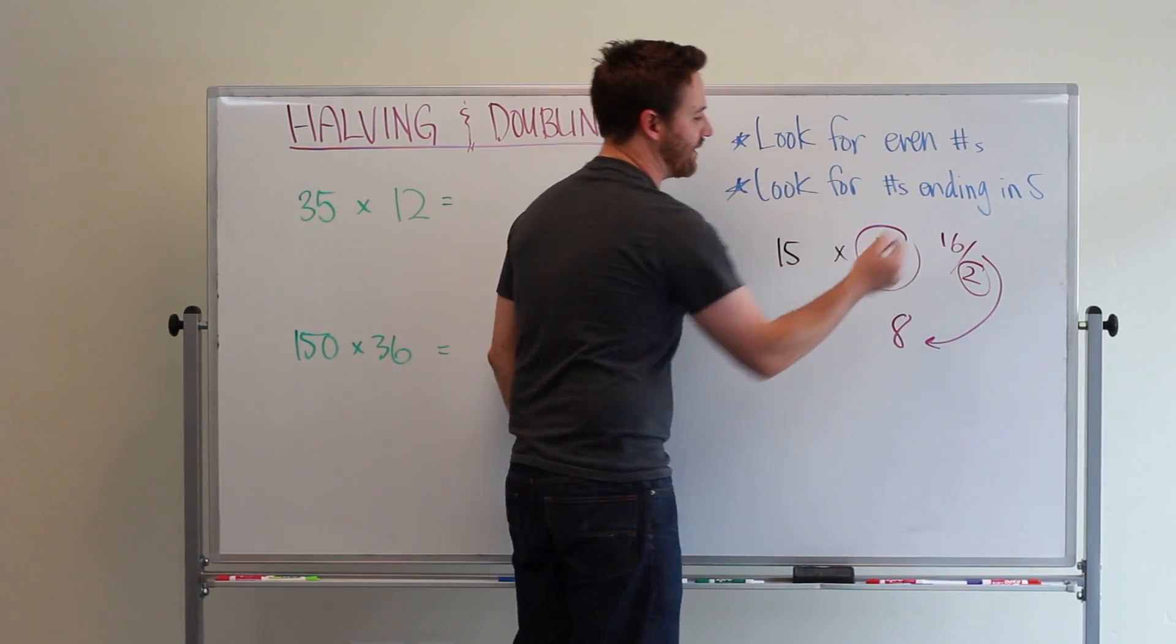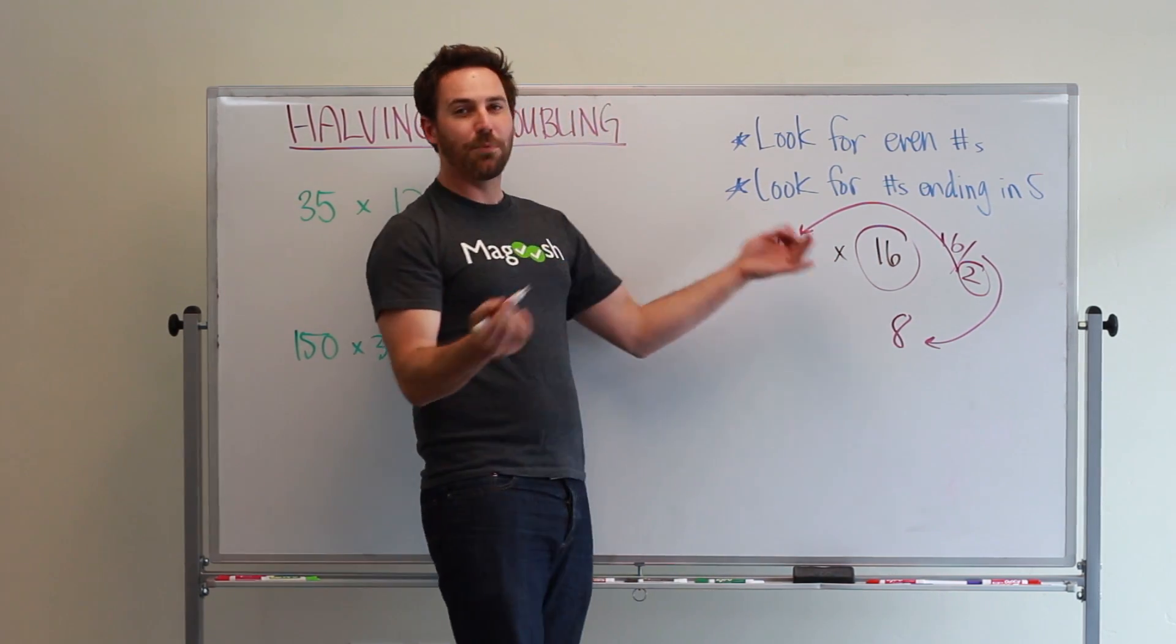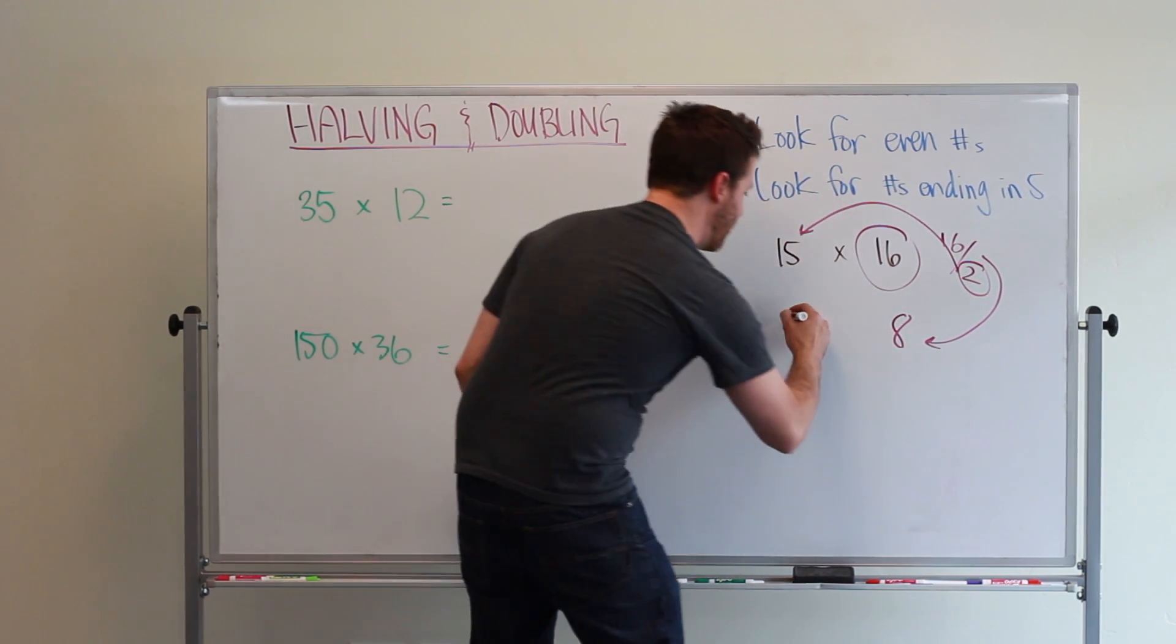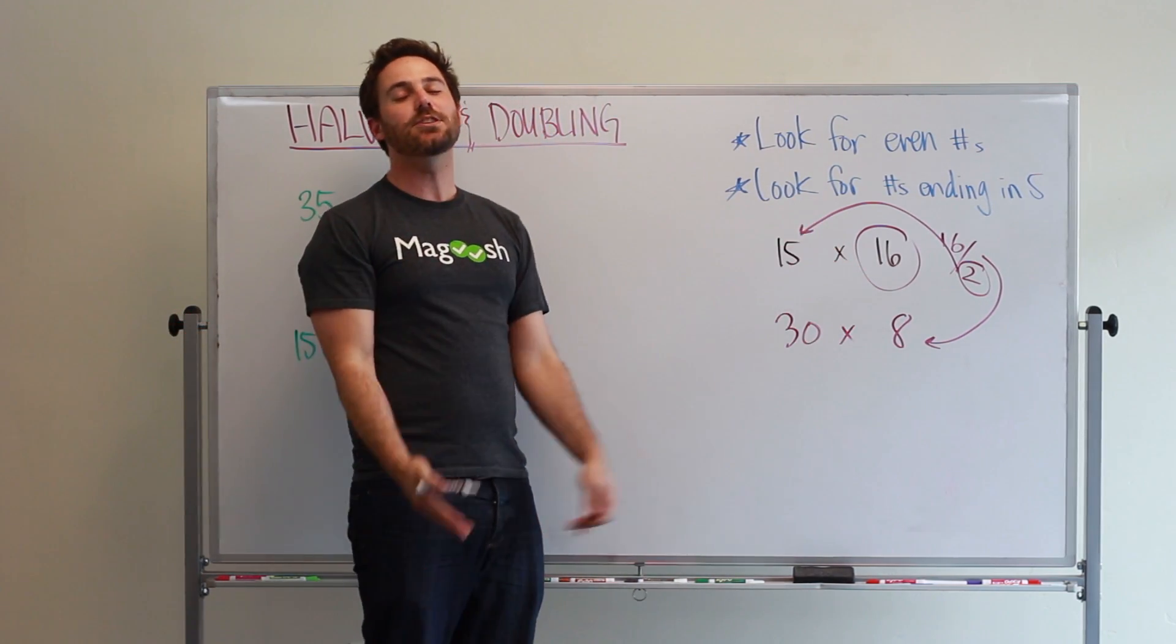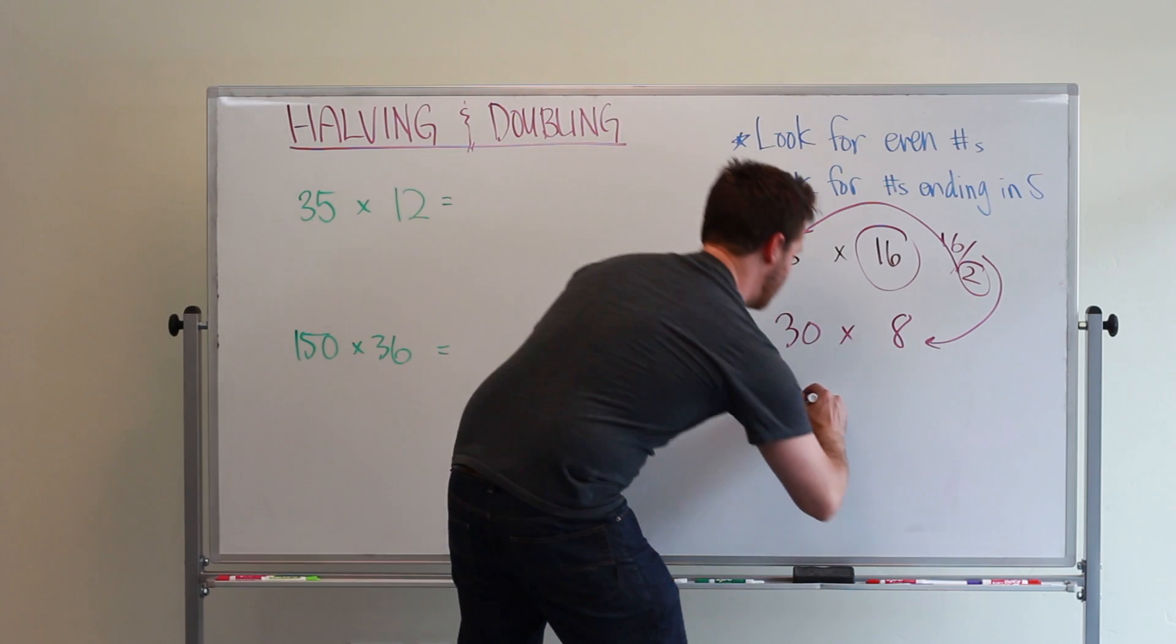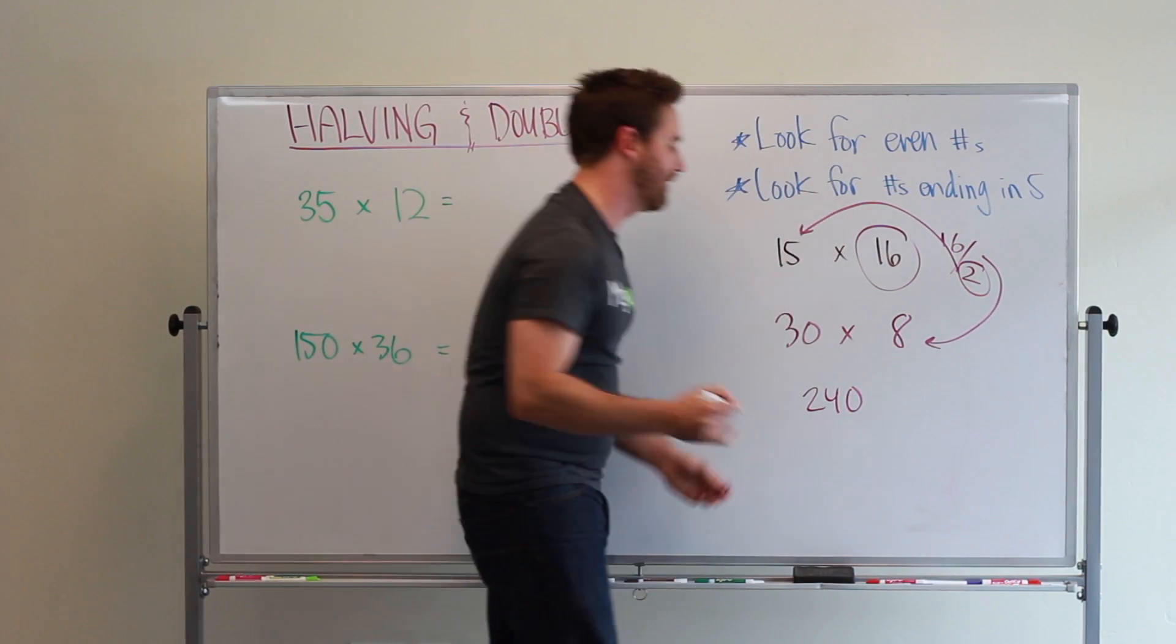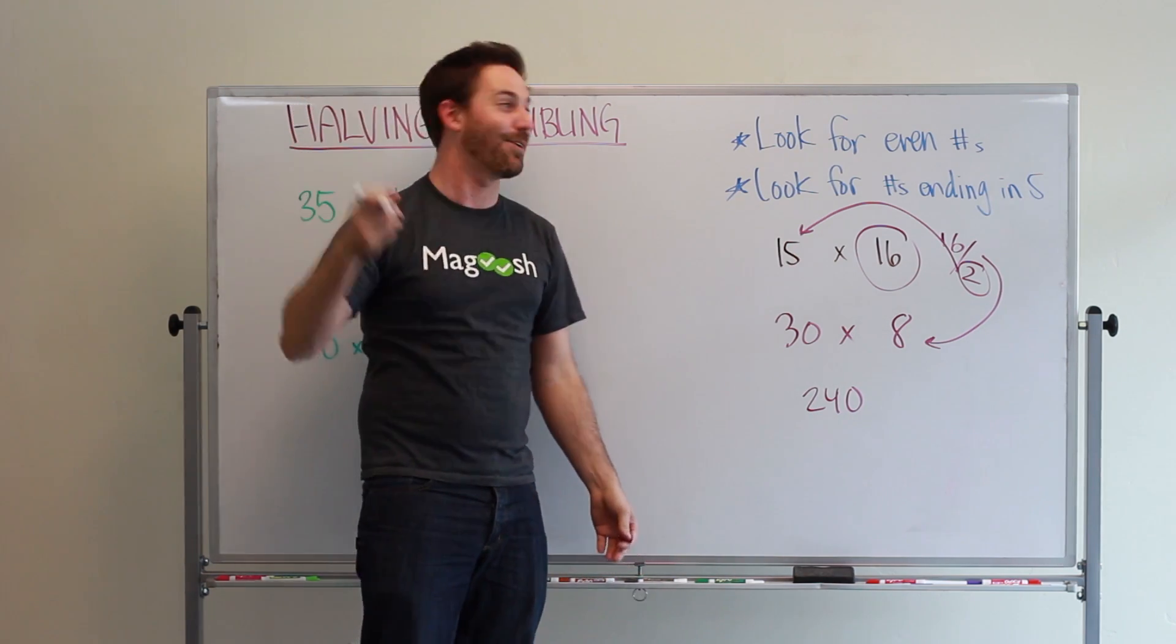I can't just make that 2 disappear—I have to hold on to it. So bring it over and double the 15 to get 30. Now what I'm really solving is 30 times 8, which is a much easier problem. It's like single digit multiplication: 3 times 8 is 24, then I add a 0 to get 240. That's why it was such a great idea!